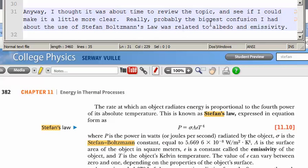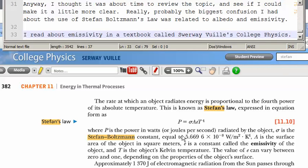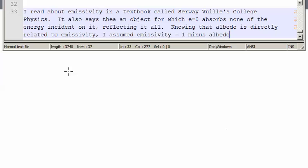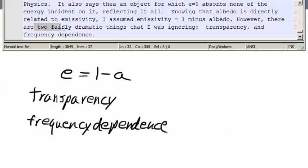Really, probably the biggest confusion I had about the use of Stefan Boltzmann's Law was related to albedo and emissivity. I read about emissivity in a textbook, and it said the value of emissivity can vary between 0 and 1. Knowing that albedo is directly related to emissivity, I assumed emissivity is equal to 1 minus the albedo. However, there were two fairly dramatic things I was ignoring, transparency and frequency dependence.